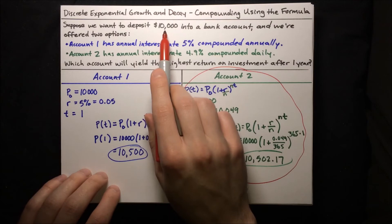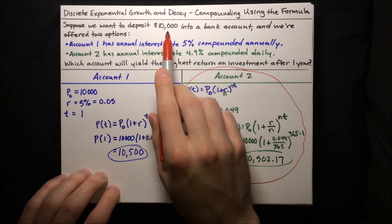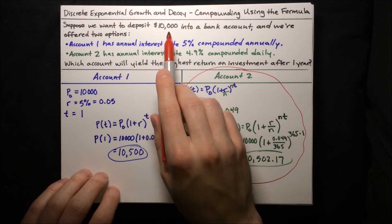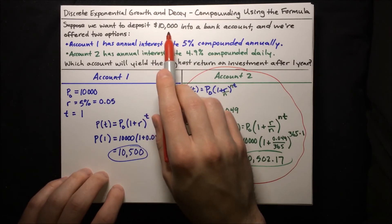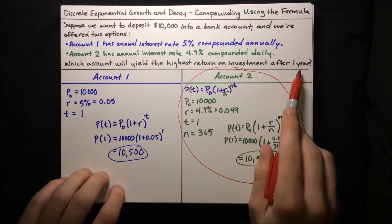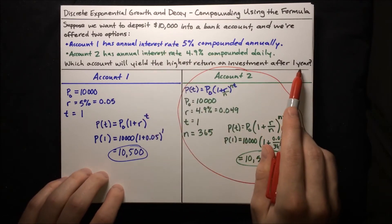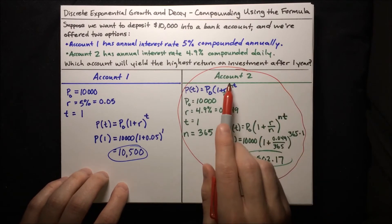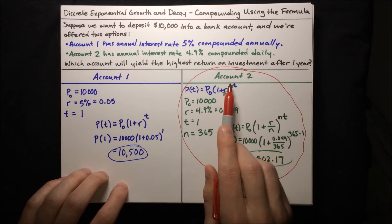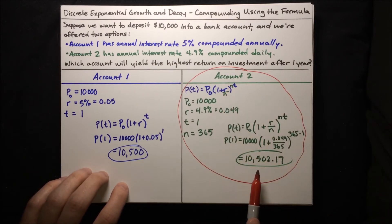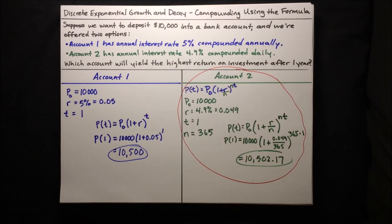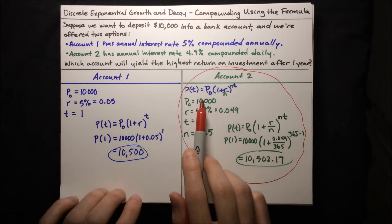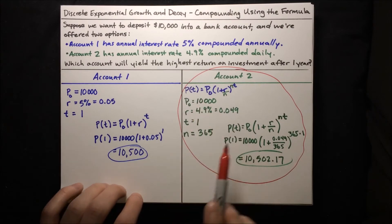$2.17 might not seem like a big deal, but when you're working with larger amounts of money compounded over long periods of time, it can really add up to a lot, especially since the additional money gained is funneled into the next compound. If instead of $10,000 we were talking about $100,000, and instead of one year we were talking about 30 years, then account 2 would be higher by over $2,000 — which is not a bad reward for going through all the math.